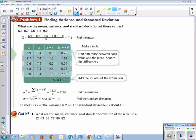So let's do this process with some data values. Problem number one: What are the mean, variance, and standard deviation of the values 6.9, 8.7, 7.6, 4.8, and 9.0? So the first thing we do is we find the mean. Instead of writing M-E-A-N, we write X with a line over it. We find the mean the same way we've been finding it since fourth grade. We add all the numbers up and divide by how many there are. So the mean is 7.4.